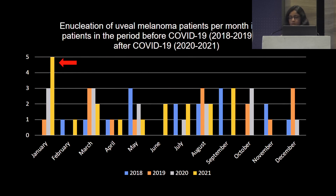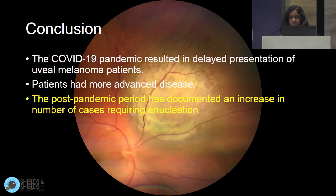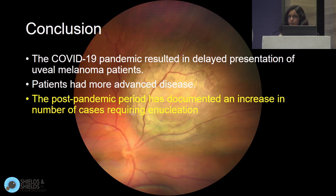In January 2021, there was a dramatic increase in the number of patients who required enucleation. We compared the corresponding nine-month periods — January to September 2019 versus 2021 — and found a significant increase in tumour thickness as well as the number of patients requiring enucleation, indicating that patients were presenting with neglected, large and extensive tumours. To conclude, the COVID-19 pandemic resulted in delayed presentation with more advanced disease, a documented increase in enucleation, and this needs further follow-up in future studies.